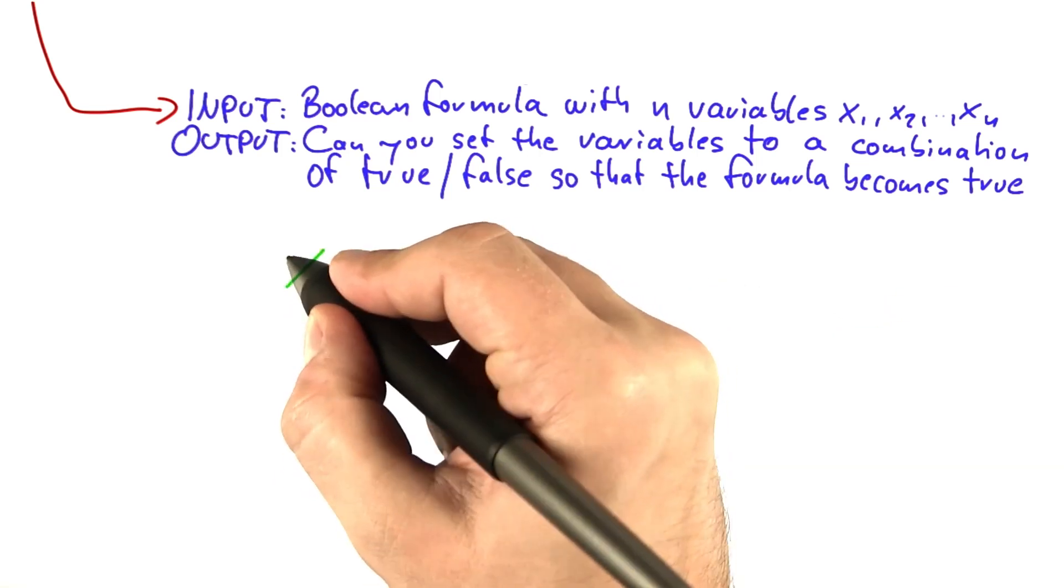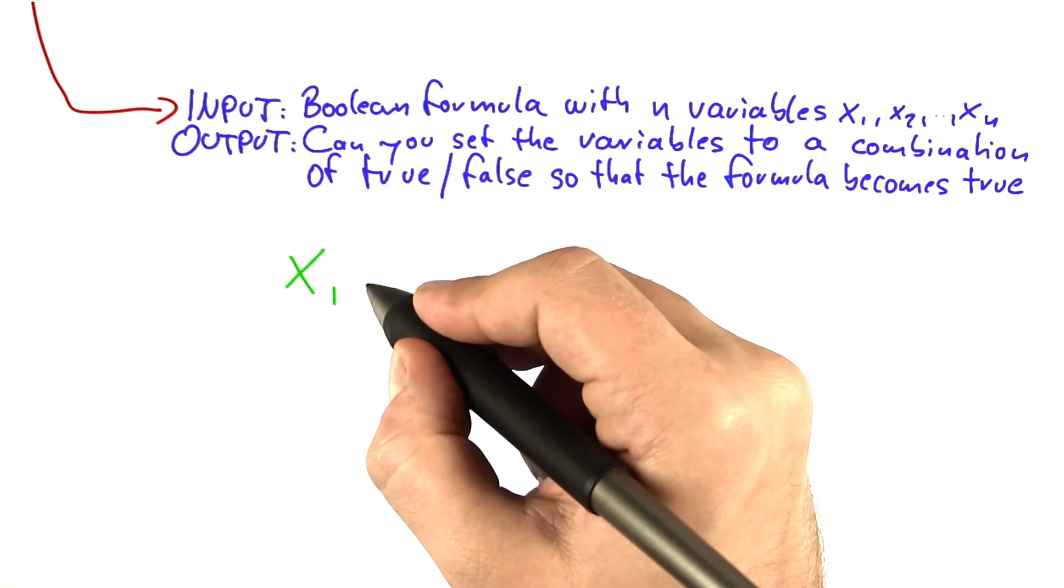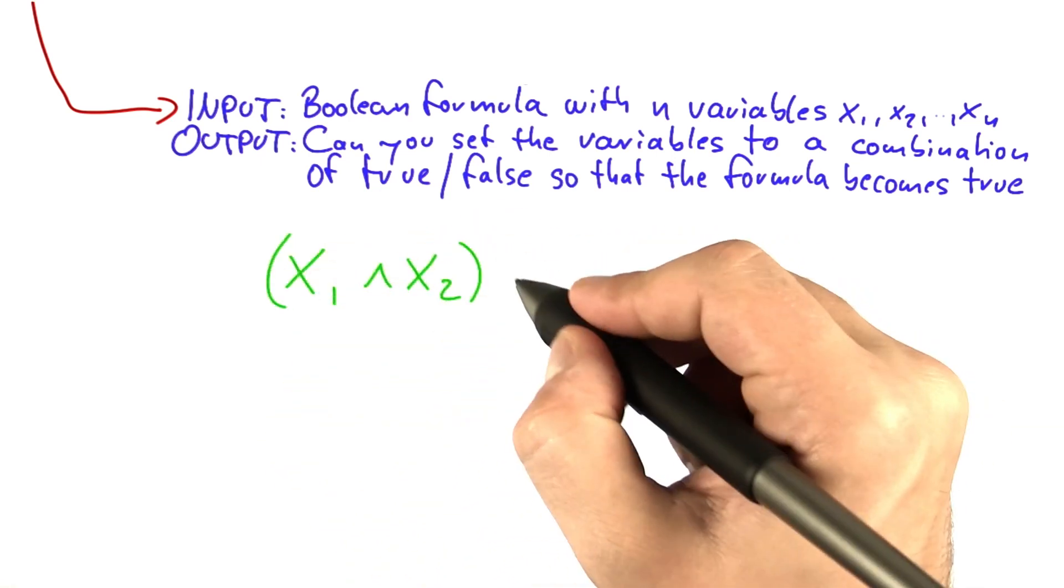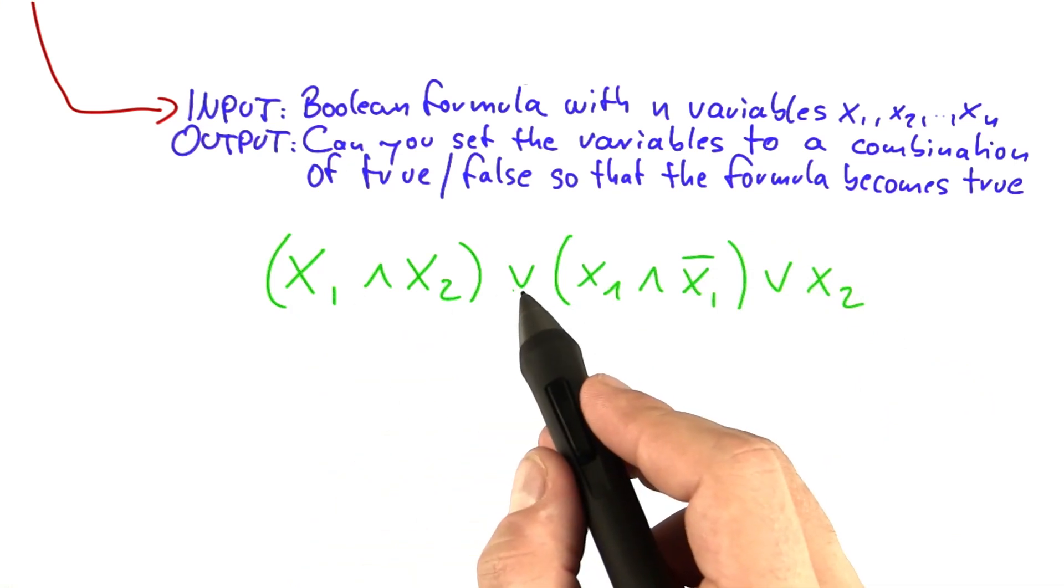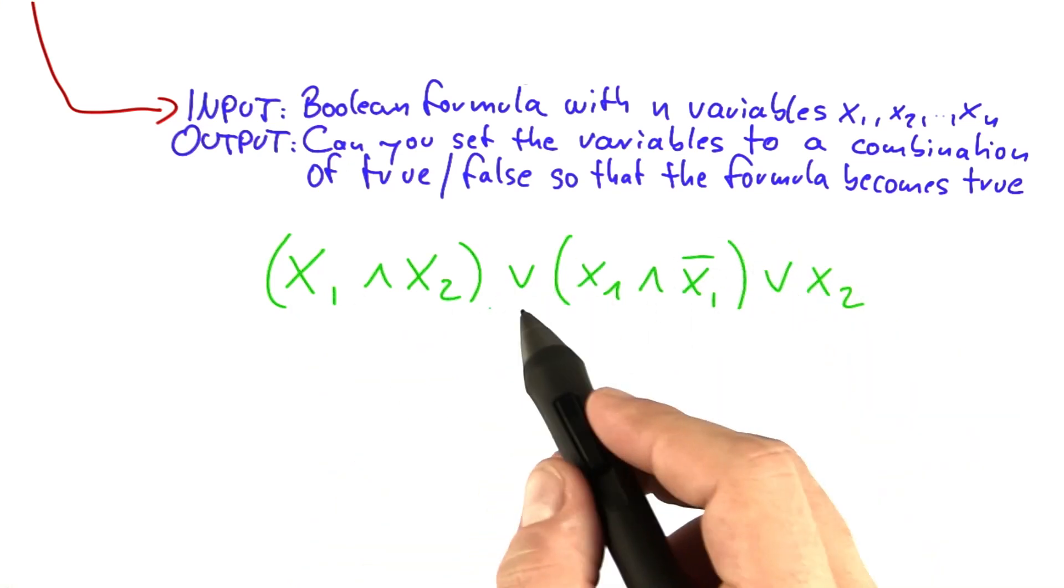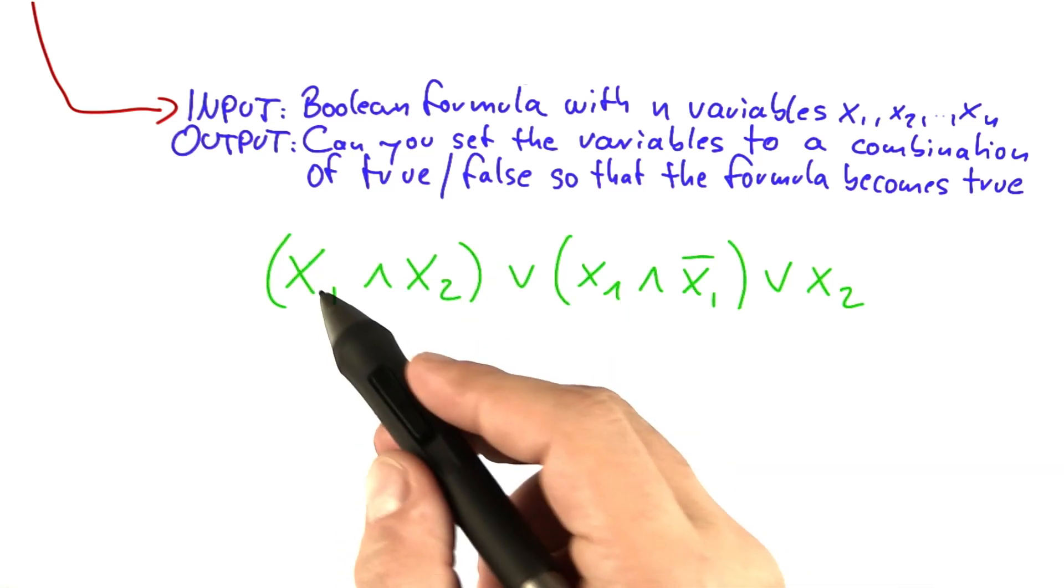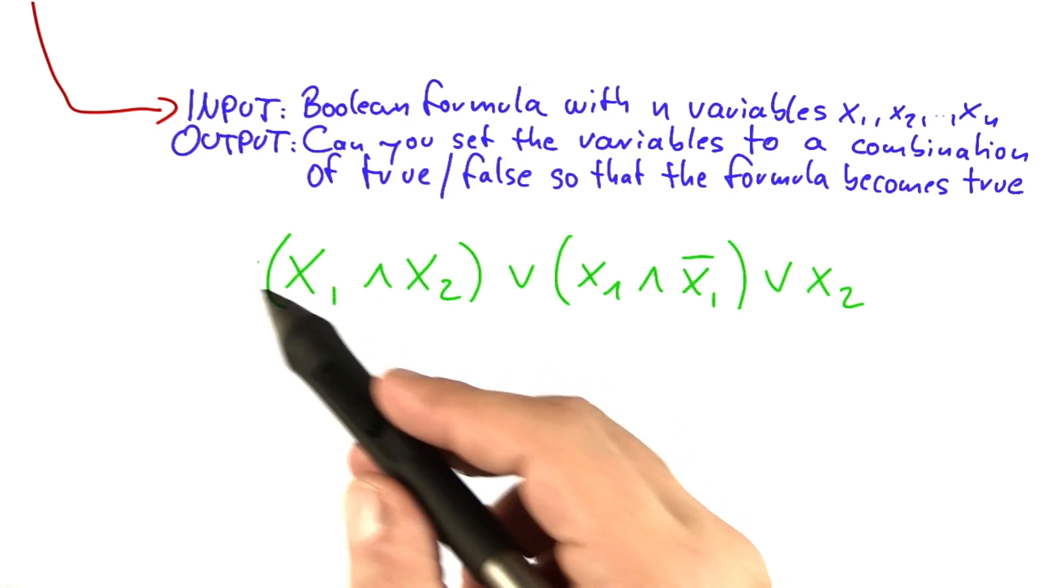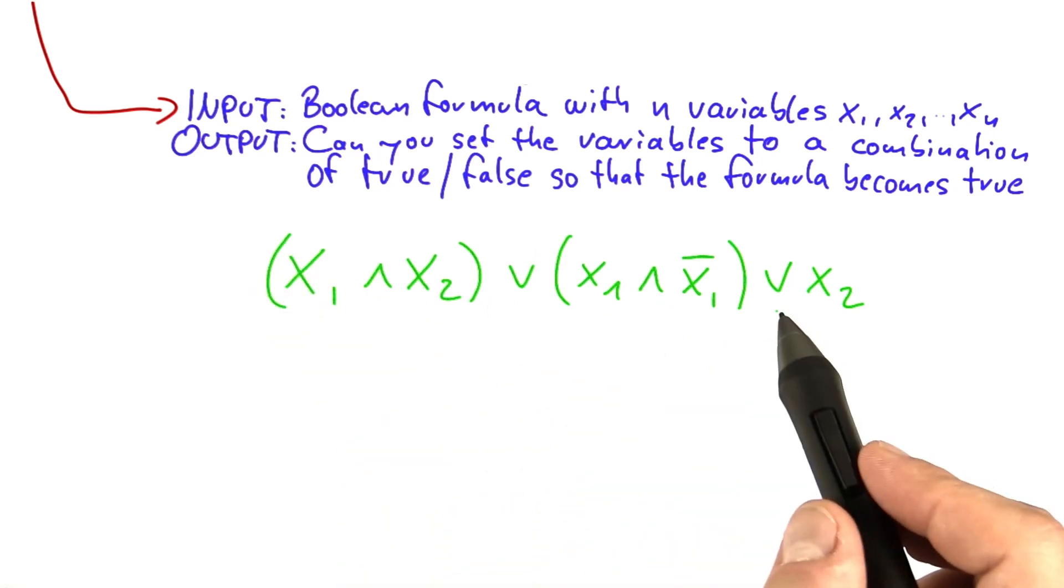Let's do a little bit more challenging example. If you had a Boolean formula such as this, x1 and x2 or x1 and not x1 or x2. And what you can also see here is that you do not always have to put brackets around each or to signify in which order you evaluate the individual ones.